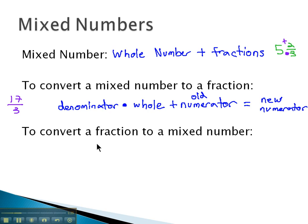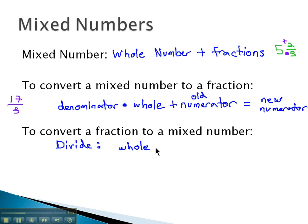To convert the other way — to convert a fraction to a mixed number — what we'll do is take advantage of the fact that that fraction bar represents division. We divide. When we divide, we'll end up with a whole number answer and some remainder. So we'll put the remainder as the new numerator — the remainder over the original denominator.